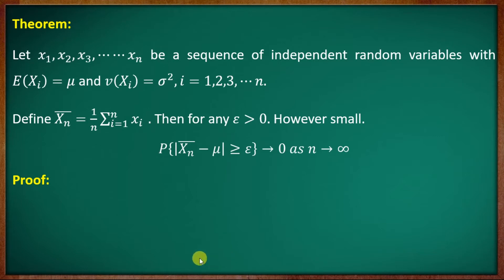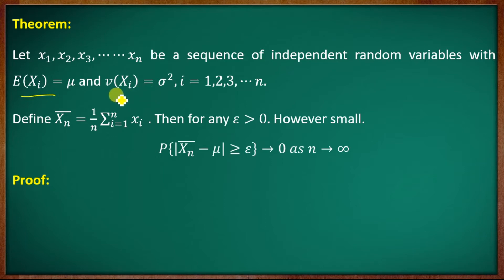For the Weak Law of Large Numbers, in the statement I have a finite number x1, x2, ..., xn. If the mean is mu, I will say sigma squared i equal to sigma squared. Now I will give the proof.